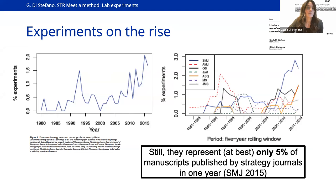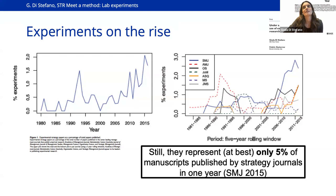I'm disappointed to see that things have not changed much with five additional years of data. At best, these papers have represented 5% of the total papers published in a journal in one year — this was SMJ in 2015. So it's clearly a trend, but it's a trend that is taking a little bit of time to take off.